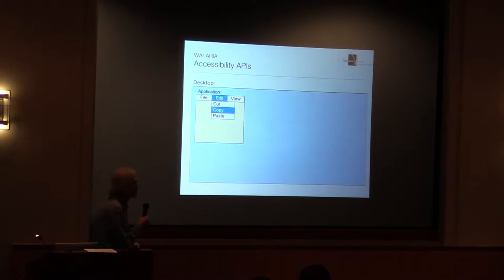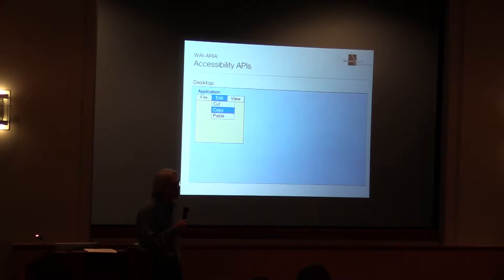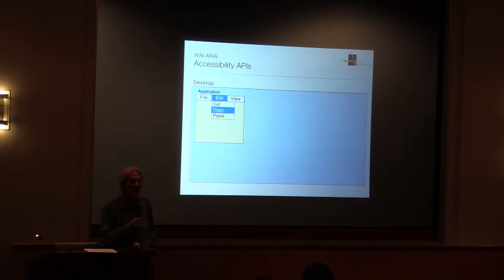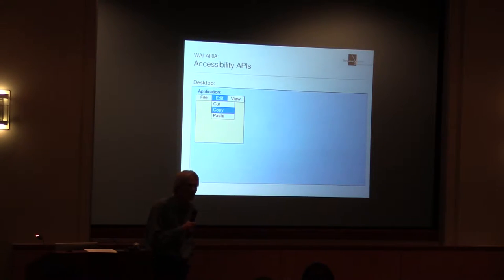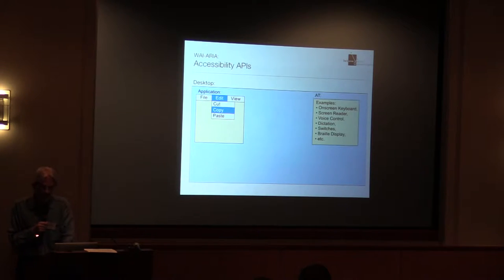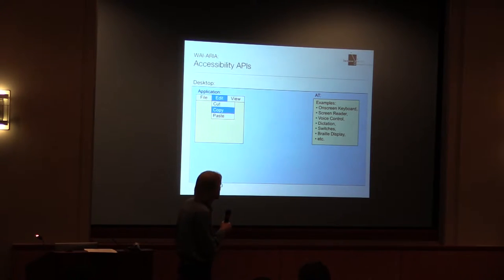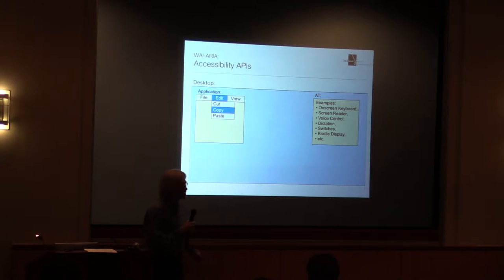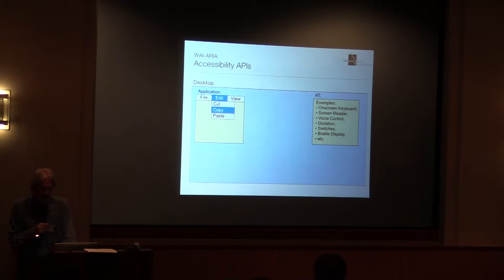Picture someone's desktop running an application. The user has gone into the menu bar, opened the Edit menu, and scrolled down to the Copy menu item, about to select it. At the same time, they might be an assistive technology user — using an on-screen keyboard, a screen reader, voice control, a screen magnifier, or a combination of all those things. That assistive technology has to say something about what's going on with that editing.